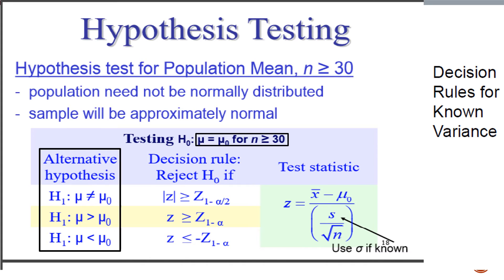For a hypothesis test for a population mean, the sample size must be greater than or equal to 30. The population need not be normally distributed, but the sample will be approximately normal. The null hypothesis states that the true mean equals the hypothesized mean. The possible alternative hypotheses are: the true mean is not equal to, greater than, or less than the hypothesized mean.